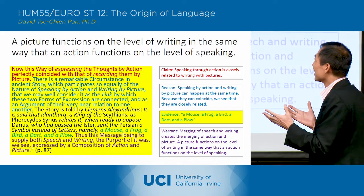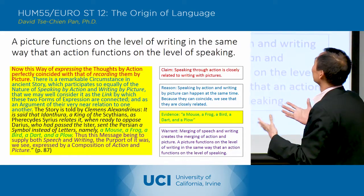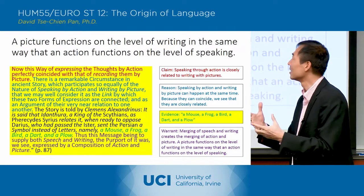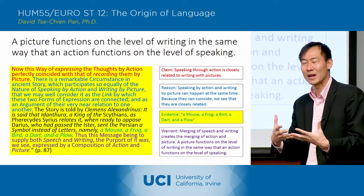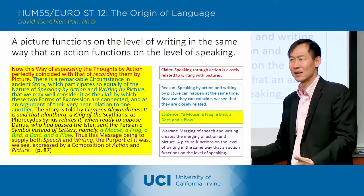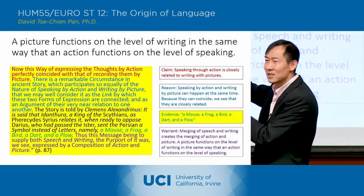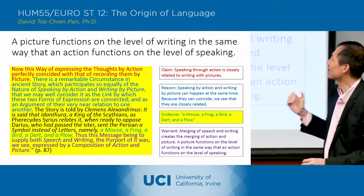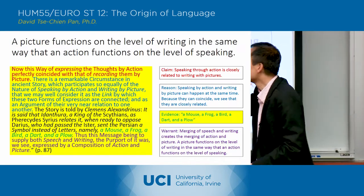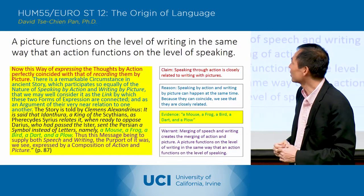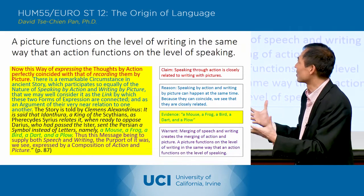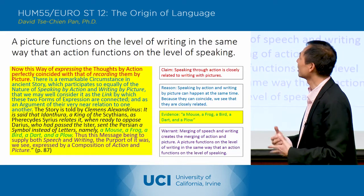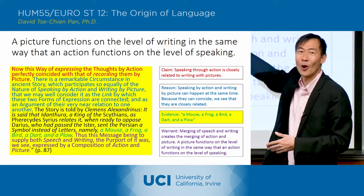So let's go through this example. He gives another example of how a picture functions on the level of writing in the same way that an action functions on the level of speaking. Remember last time we talked about how actions could communicate things. Now he's going to give us something that's a mixture of an action and a picture. 'This way of expressing thoughts by action perfectly coincides with that of recording them by picture.' That's the claim. He says there's 'a remarkable circumstance in ancient story which participates so equally of the nature of speaking by action and writing by picture' — it's a mixture of both — which 'we may well consider as the link by which these two forms of expression are connected.' He says this is the reason, this is the argument for the claim.